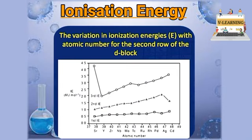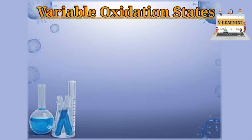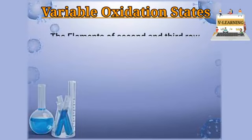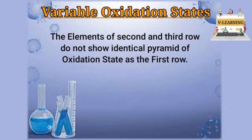जो third ionization enthalpy है वो sufficiently higher है than second and first ionization enthalpies. अब next property है oxidation state — यह काफी important property होती है क्योंकि transition elements बहुत ज़्यादा type की oxidation states show करते हैं, यानि कि variable oxidation states show करते हैं। जैसा कि first transition series में manganese maximum number of oxidation states show करता है up to +7। इसी तरह second और third transition series का oxidation state का pyramid बनेगा — एक pattern होता है जो pyramid की shape लेता है — पर वो second और third series के लिए identical नहीं होगा, irregularities show करता है।